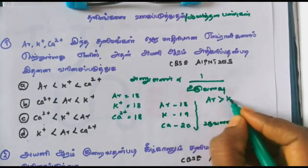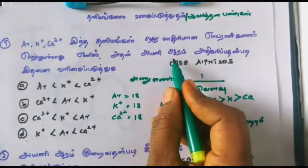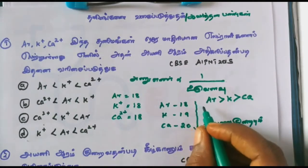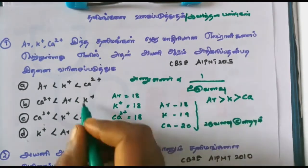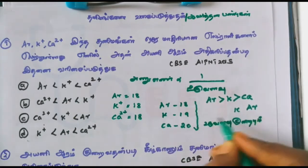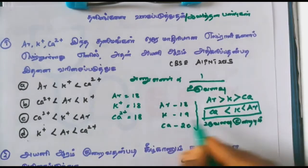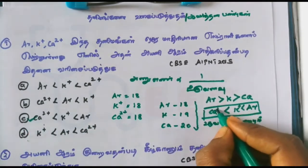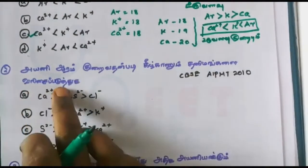Argon is called the reference — potassium and calcium are isoelectronic with argon. So we will use the same isoelectronic series: argon, potassium, calcium 2 plus.